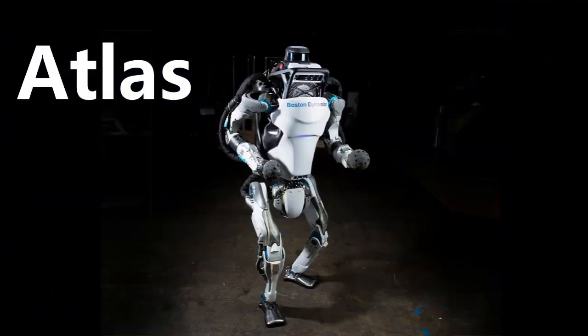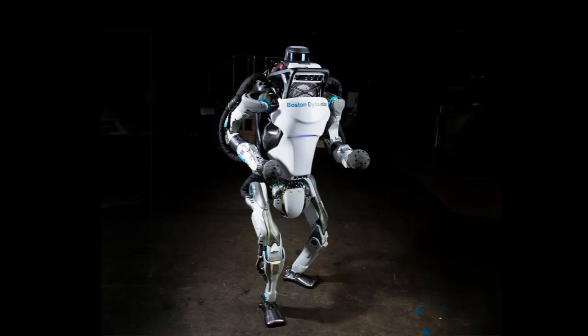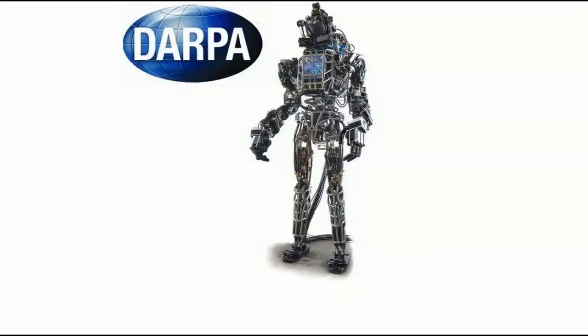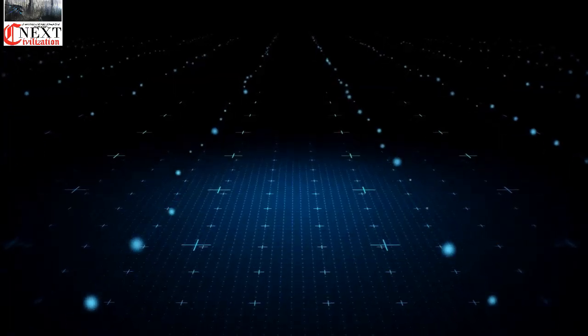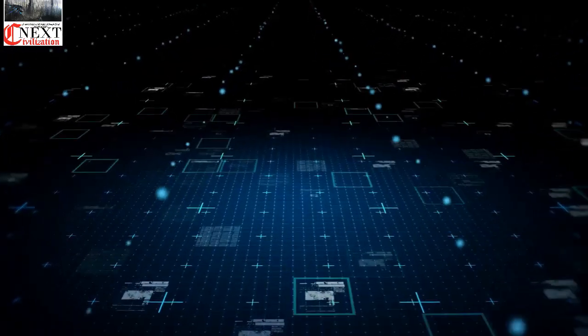Atlas is a bipedal humanoid robot primarily developed by the American robotics company Boston Dynamics, with funding and oversight from the US Defense Advanced Research Projects Agency. The 1.8-meter robot is designed for a variety of search and rescue tasks, and was unveiled to the public on July 11, 2013.